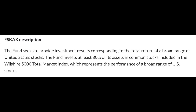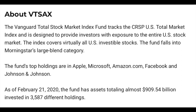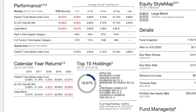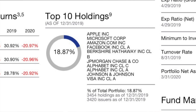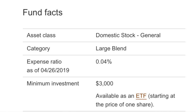Now let's talk about our second fund, the Vanguard Total Stock Market Index Fund, ticker VTSAX. VTSAX tracks the CRSP US Total Stock Market Index, designed to provide investors exposure to the entire US stock market, covering virtually all US investable stocks. As of February 21st of this year, the fund has assets totaling almost 909 billion dollars and is invested in almost 3,600 different companies. In comparison, FSKAX holds about 3,500 companies — very similar. VTSAX has an expense ratio of 0.04%, or four basis points, meaning you're paying four dollars on ten thousand dollars.